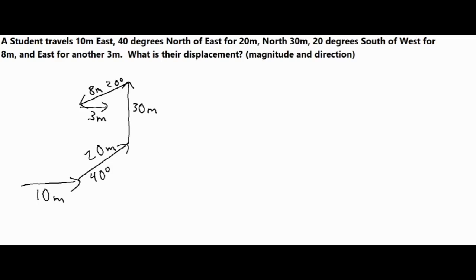I finished drawing out all five vectors described in the original problem. Now that I have a rough sketch, here is our plan: we're going to place each vector in either an x or y column depending on whether they're horizontal or vertical. Once all vectors are sorted into x and y columns, we can combine them and find the magnitude and direction of our final displacement or resultant.